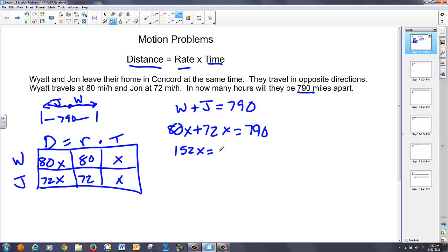152X is equal to 790. We're going to divide both sides by 152. And it turns out we get a decimal. It's not a whole number. So we get X is equal to, after I round, 5.2 hours. And they ask how long is it going to take. And that's the X amount of hours that each traveled. And 5.2 is our actual answer in this case.